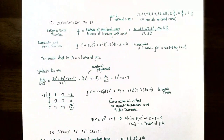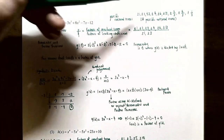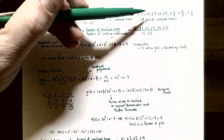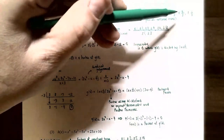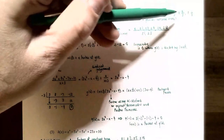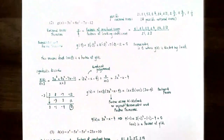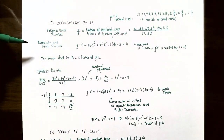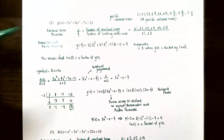In total there are 18 different possible rational zeros: ±1, ±2, ±3, ±4, ±6, ±12, ±1/3, ±2/3, and ±4/3. We now use the remainder and factor theorems to find which of these actually give a remainder of zero and are thus real zeros of g(x).